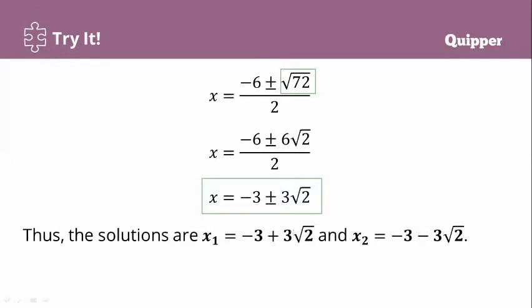Separating the two solutions, we have negative 3 plus 3 square root of 2, and negative 3 minus 3 square root of 2. That's how to solve a quadratic equation using the quadratic formula.